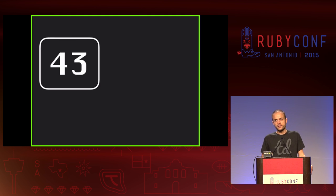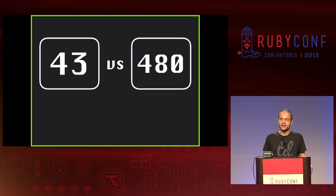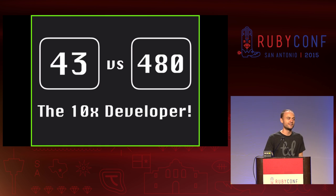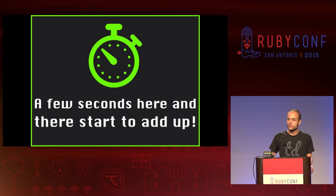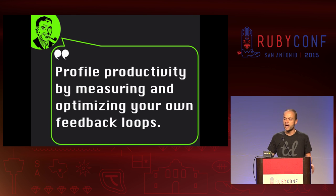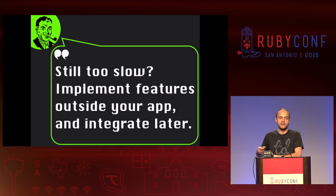43 is significantly smaller than 480, and what we just did together here is found the 10x developer — the mythical 10x developer is in the room today. A few seconds here and there really add up. I encourage you: use a stopwatch, profile, monitor your activity, and seriously try to optimize your own feedback loops. If your app is just too slow, you can always iterate quickly on just a focused test and integrate later if you have to. It's really important.